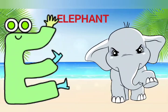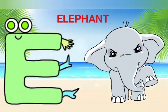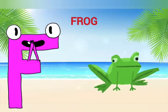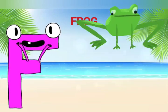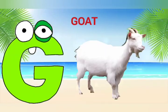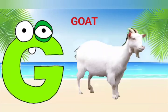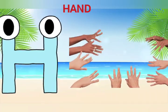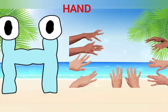E is for Elephant, E-E-Elephant. F is for Frog, F-F-Frog. G is for Goat, G-G-Goat. H is for Hand, Ha-Ha-Hand.